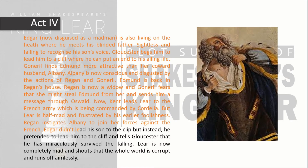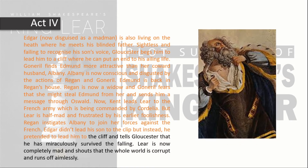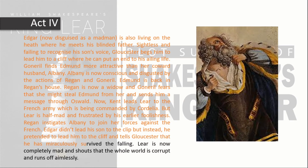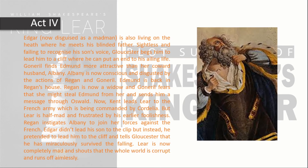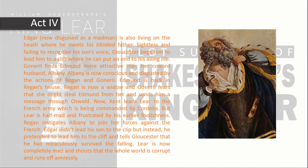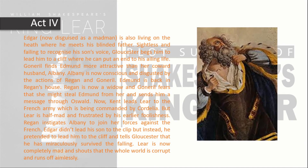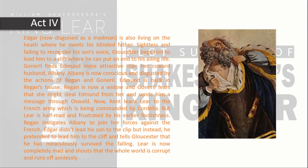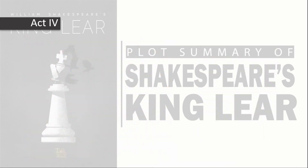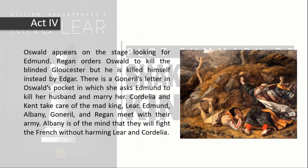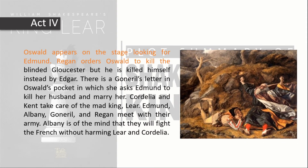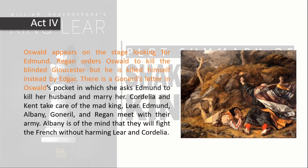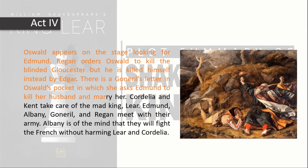Kent leads Lear to the French army which is being commanded by Cordelia. But Lear is half mad and frustrated by his earlier foolishness. Regan instigates Albany to join her forces against the French. Edgar did not lead his father to the cliff but instead pretended to, and tells Gloucester that he has miraculously survived the fall. Lear is now completely mad and shouts that the whole world is corrupt, and runs off aimlessly. Regan orders Oswald to kill the blinded Gloucester, but Oswald is killed himself instead by Edgar.